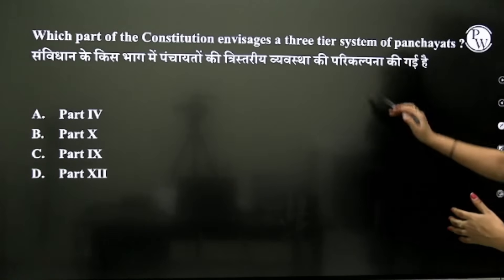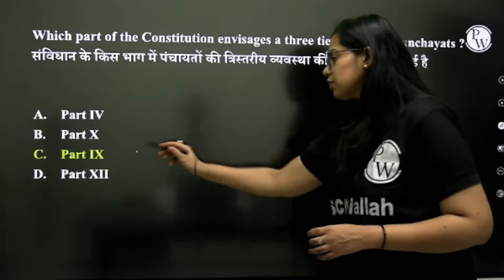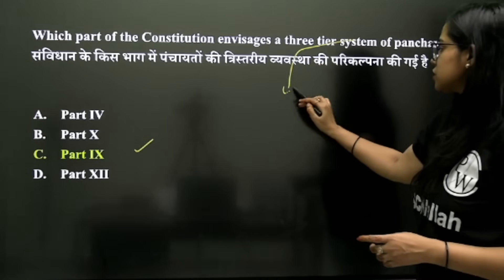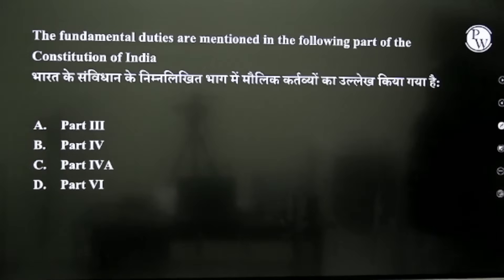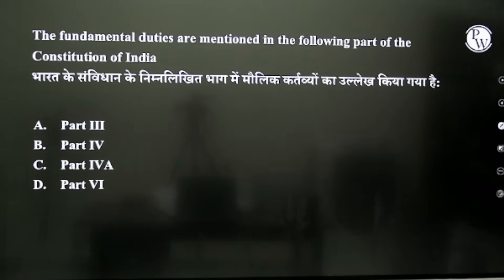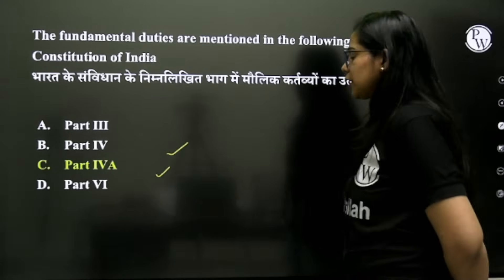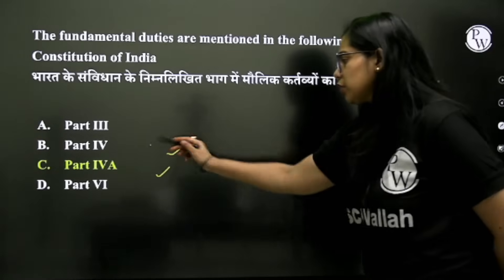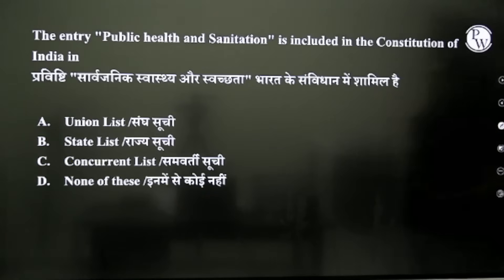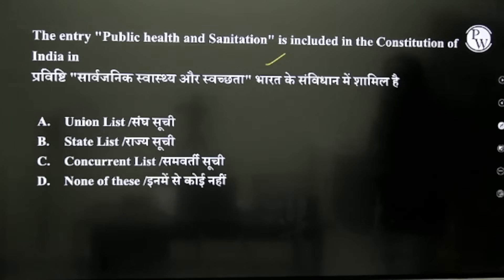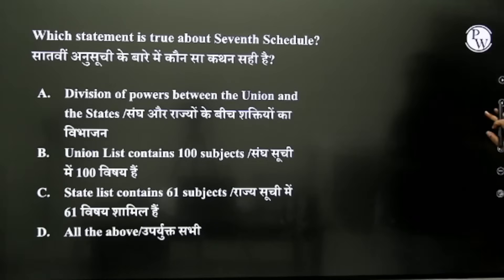Which part of the Constitution deals with the three-tier system of Panchayat? That is found in Part 9. This three-tier system was given by the Balwant Rai Mehta Committee. Fundamental duties, when they come up, will be found in Part 4A. Part 4 is for DPSP, Part 6 is for States, Part 3 is for Fundamental Rights. Public health and sanitation is included in the State List.